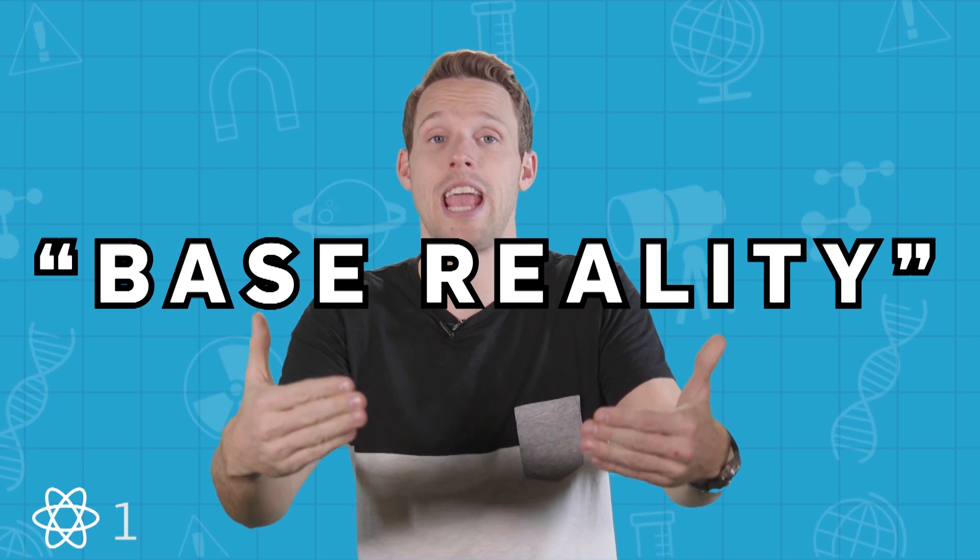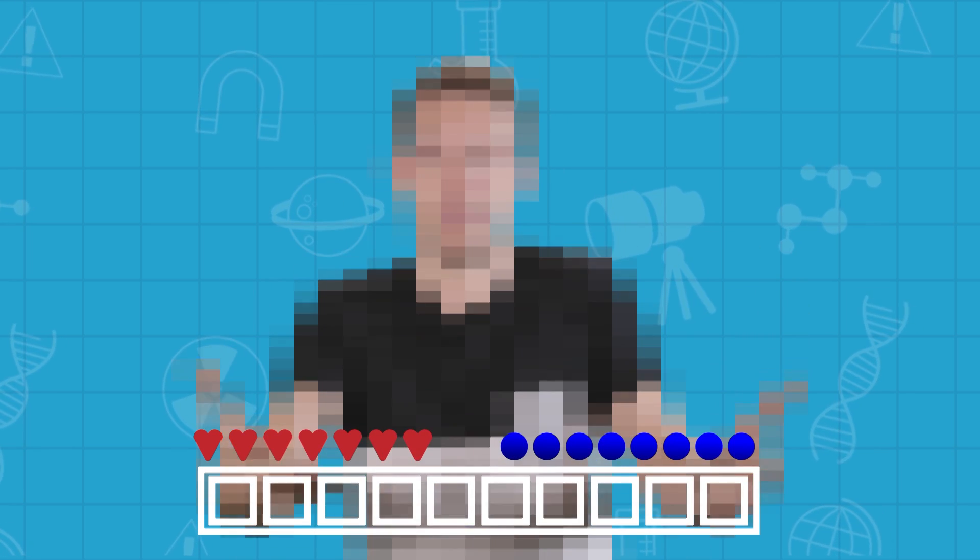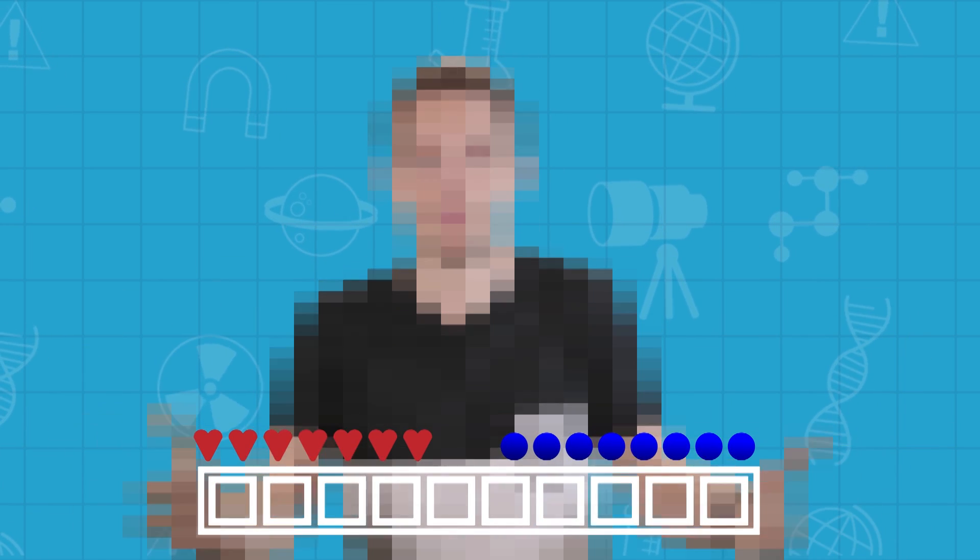Elon Musk thinks that there is only a one in a billion chance that we're living in what's known as base reality, the actual real, non-simulated existence. He argues that, given the advances that we've made in believable video games and graphics in just the last 40 years, one day we'll be able to make a simulation that is indistinguishable from reality. And given that we'd probably then make thousands of these simulations, isn't it likely that we're actually in the future and living in one right now?